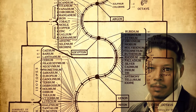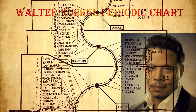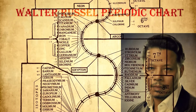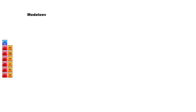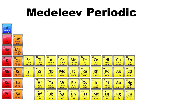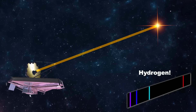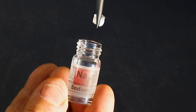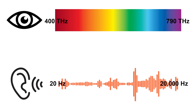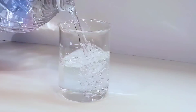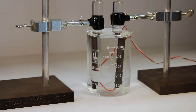Terence Howard claims that this 1926 periodic chart is better than the periodic table that science has developed. I'm going to show you why he's wrong with science and some cool experiments.